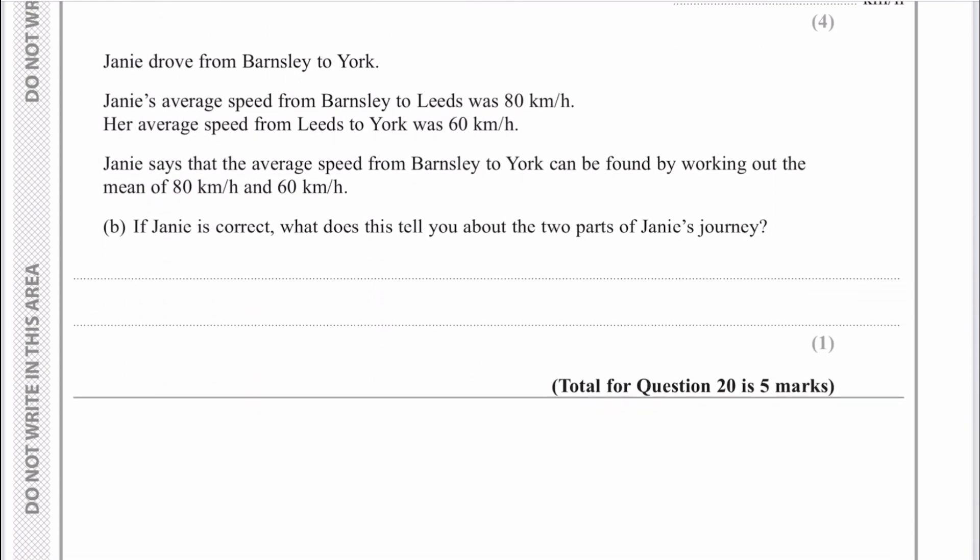There's some more words at the bottom. Janie drove from Barnsley to York, her average speeds were 80 and 60. If Janie is correct, what does this tell you about the two parts of the journey? If her average speed is found by working out the mean of 80 and 60, a lot of words for just one mark. Basically, what we would say is that the time must be the same between both journeys. That would be it for this question.